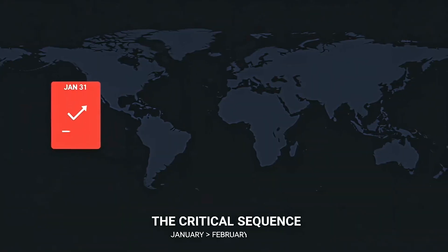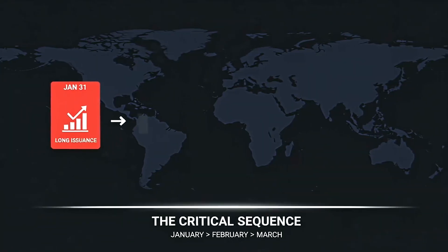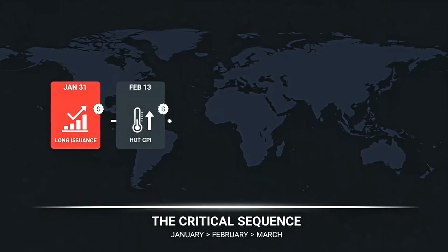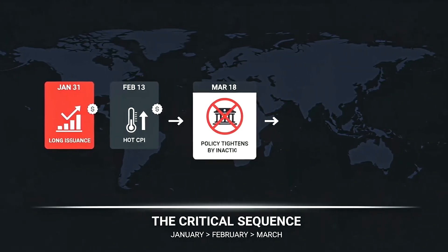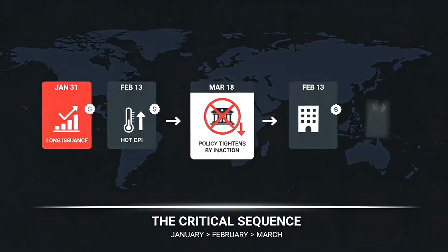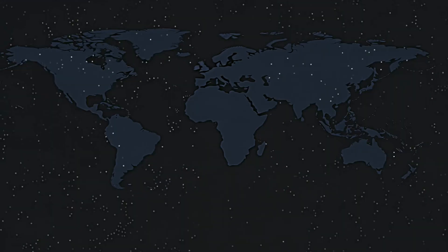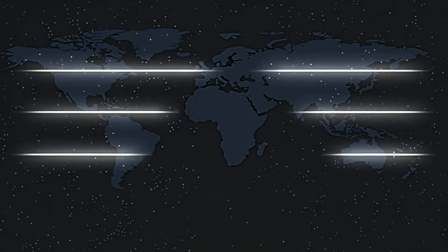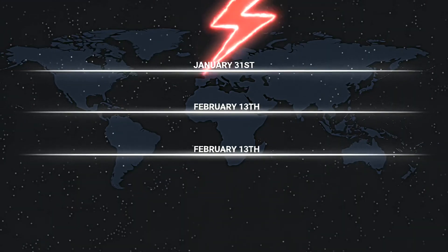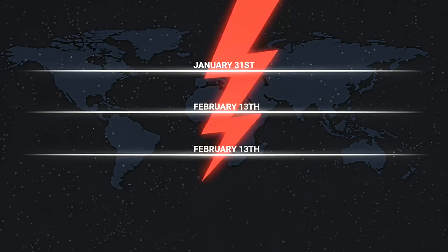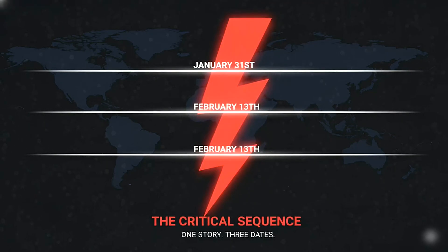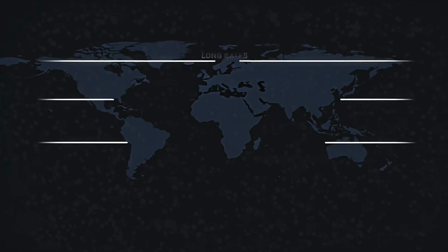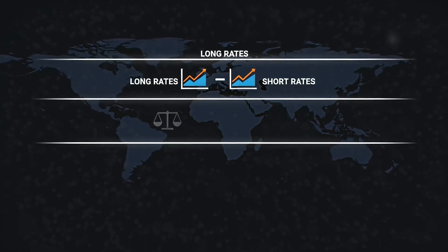Watch what happens next. If the January 31st refunding lifts long issuance while CPI on February 13th prints hot, the March 18th policy path tightens by inaction. If that sequence lands, the snap seen this quarter won't be the last. Three dates, one story: January 31st, February 13th, March 18th. Now translate the technicals into plain-sight trackers.